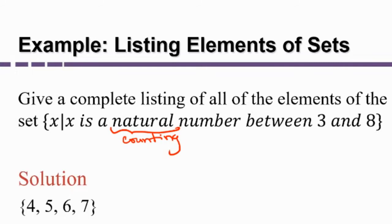So whenever it says between, we're not going to include those numbers. If we wanted to include three and eight in the set, we would put the word between three and eight inclusive. And that would be {3, 4, 5, 6, 7, 8}.